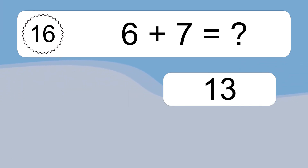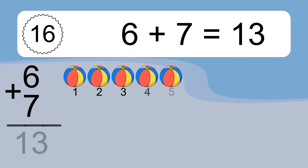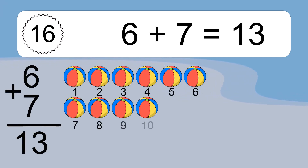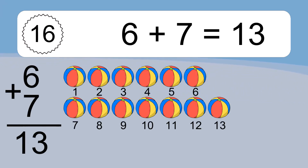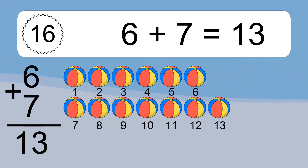6 plus 7 equals what? 6 plus 7 equals 13. Let's count it: 1, 2, 3, 4, 5, 6, 7, 8, 9, 10, 11, 12, 13.